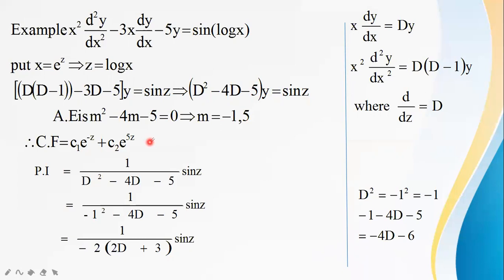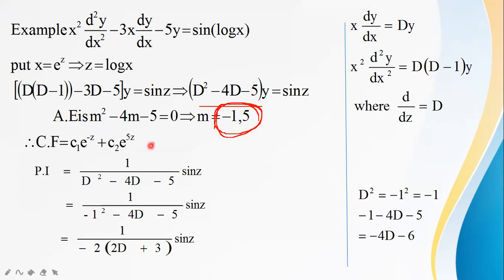For the complementary function, set the auxiliary equation to zero: m² − 4m − 5 = 0, giving m = −1, 5. The roots are real and distinct, so CF = c₁e^(−z) + c₂e^(5z).